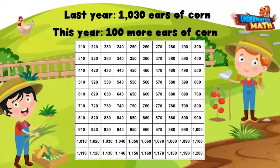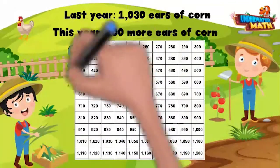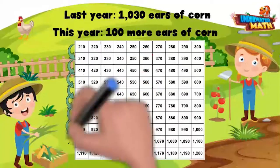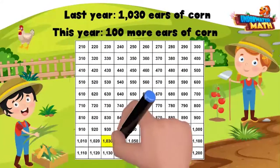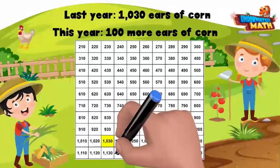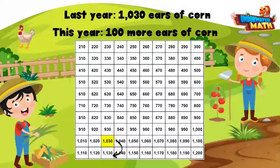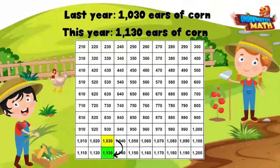Remember, as you move from one row to the next on the thousands chart, you are counting up or down by 100. If we want to know 100 more, we can look one row down from 1,030. 100 more than 1,030 is 1,130.